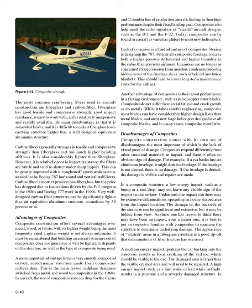In a composite structure, a low-energy impact, such as a bump or a tool drop, may not leave any visible sign of the impact on the surface. Underneath the impact site there may be extensive delaminations, spreading in a cone-shaped area from the impact location. The damage on the backside of the structure can be significant and extensive, but it may be hidden from view. Any time one has reason to think there may have been an impact, even a minor one, it is best to get an inspector familiar with composites to examine the structure to determine underlying damage.